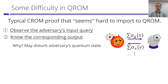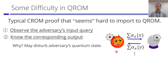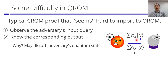The quantum ROM creates a lot of difficulties in proofs. Many proof techniques from the classical ROM that we take for granted seem hard to import to the QROM setting. Two such techniques are observing the adversary's input query, and knowing what the corresponding output was. The reason this is difficult is that since queries are in superposition, measuring them collapses to a single state. And if the input and output queries were entangled with the adversary's quantum state, measurement might disturb that state — so the adversary might notice it was being measured.